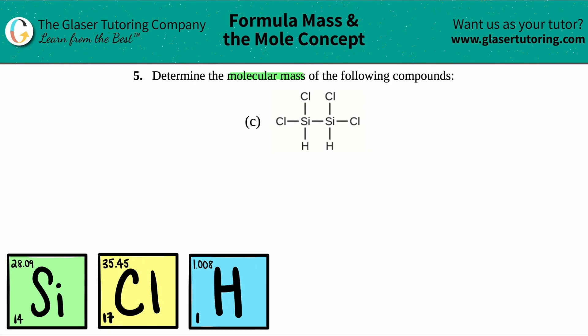I'm just going to be looking at the individual elements. Now on here I see that I have three different types of elements. I see that I have these SIs, and Si stands for silicon. I see that I have these CLs, and Cl stands for chlorine. And then I see that I have these Hs, and H stands for hydrogen.